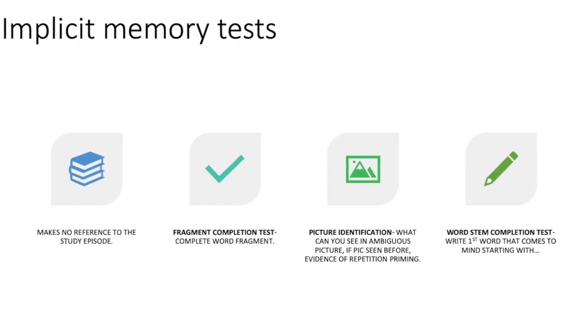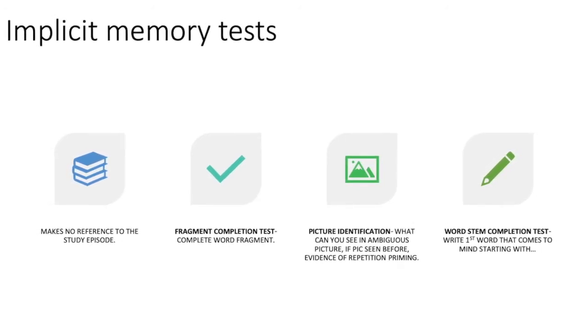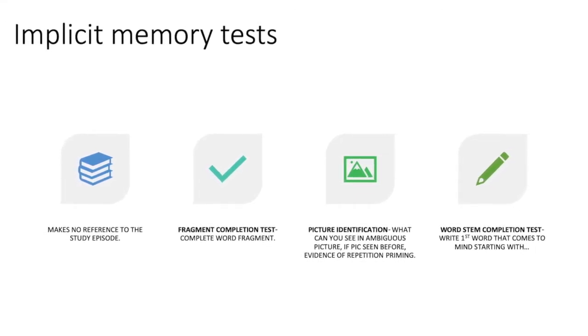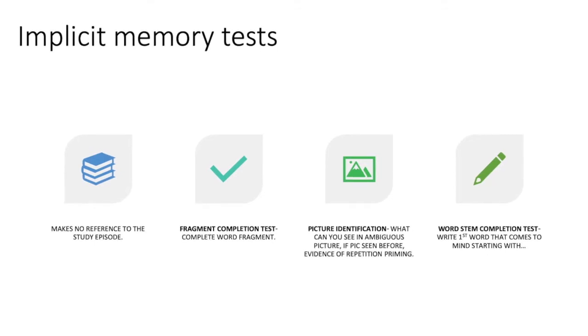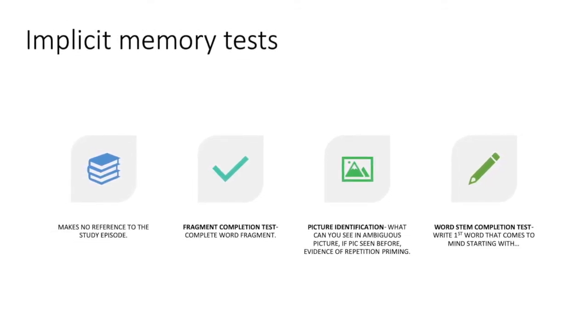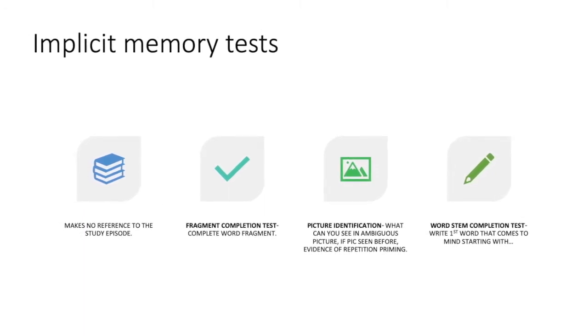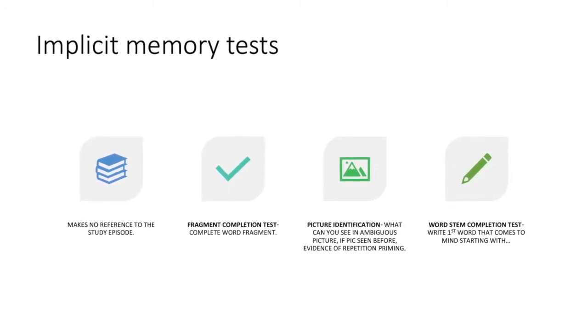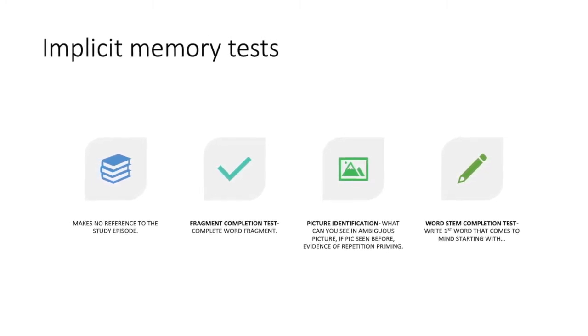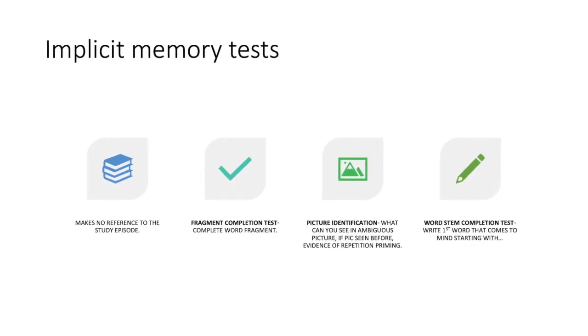There are also implicit memory tests which make no reference to the study episode. They include fragment completion tests, whereby individuals are required to complete a word fragment; picture identification, which asks participants about what they can see in an ambiguous picture and if they've seen this picture before (this is evidence of repetition priming); and word stem completion tests, where individuals have to write the first word that comes to mind starting with a given stem.